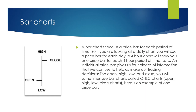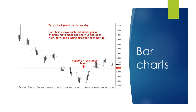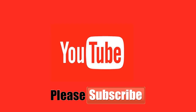Whether you're using a candlestick or a bar chart, you only have four pieces of information: the open, the high, the low, and the close. A bar chart is sometimes called an OHLC — open, high, low, and close. On a bar chart, it's very easy to spot things like support and resistance levels because it's a very uncomplicated visual representation of price. I use my bar charts specifically for drawing my support and resistance lines.